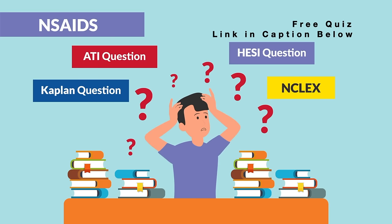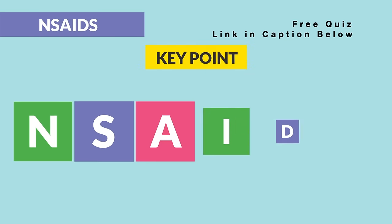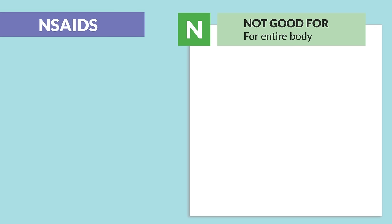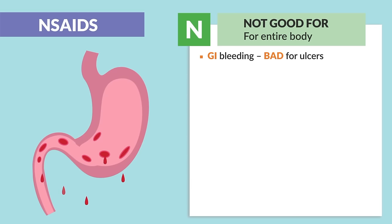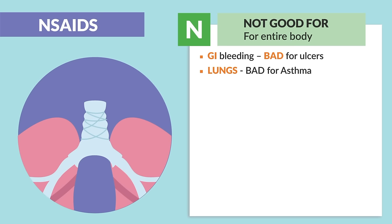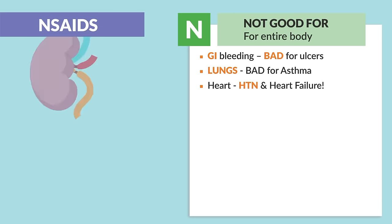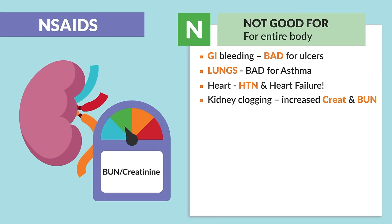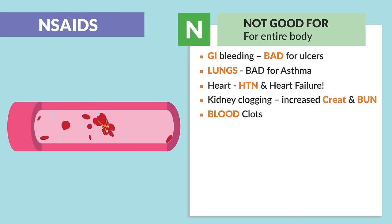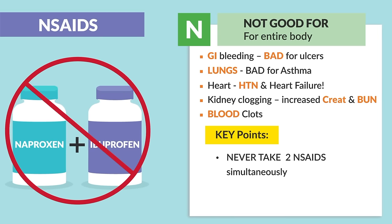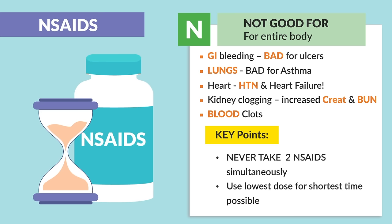To help you remember key points for your exams, we use the acronym NSAIDs. N is for 'not good for the entire body': we're talking GI bleeds, so it's bad for ulcers; bad for the lungs causing bronchospasms, so bad for asthmatic patients; bad for the heart leading to hypertension and worsening heart failure; and kidney clogging — it increases creatinine and BUN, the two kidney labs, as well as blood clots. The key point: never take two NSAIDs simultaneously, and use the lowest dose for the shortest time possible.